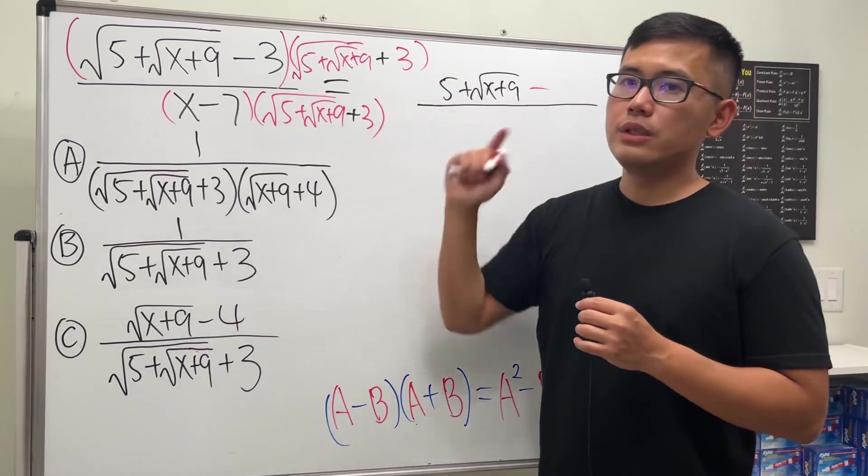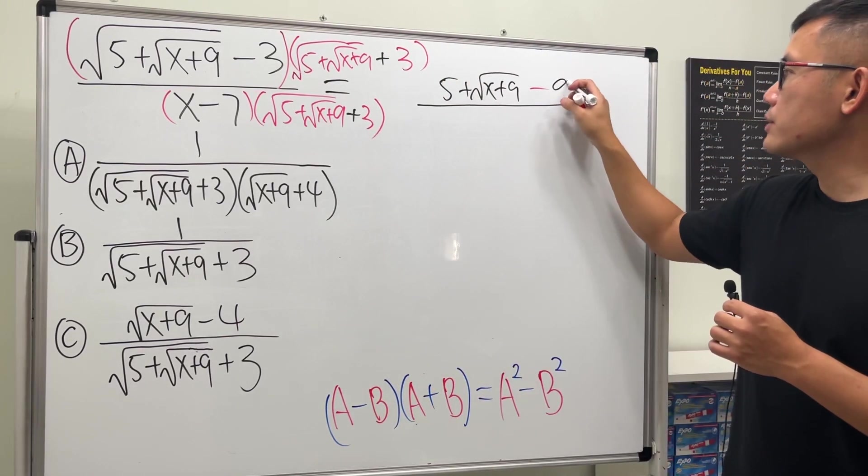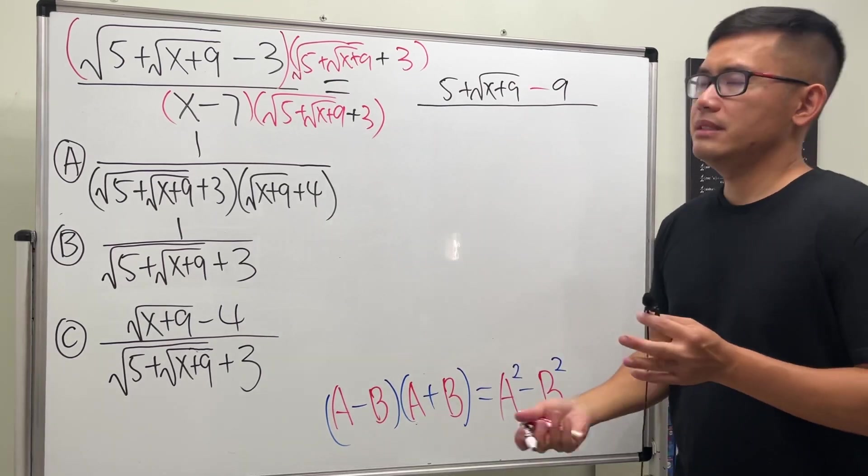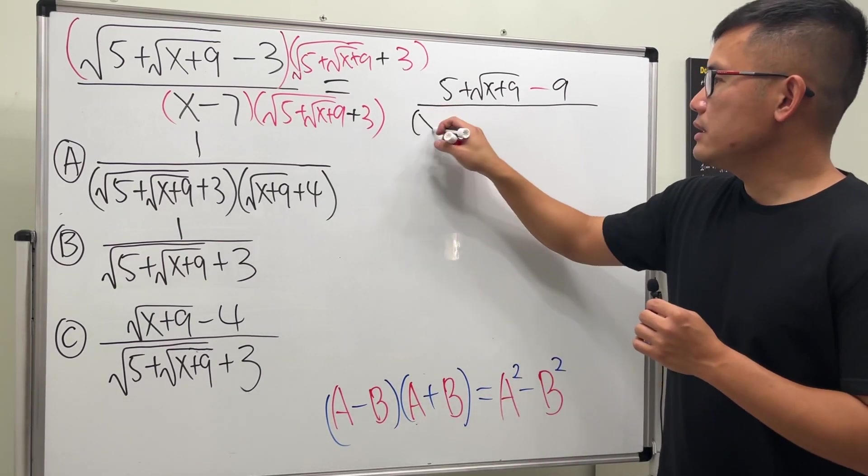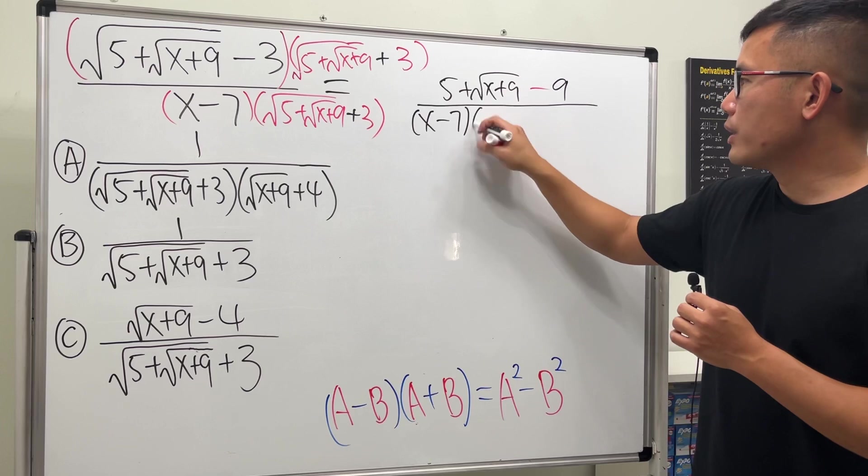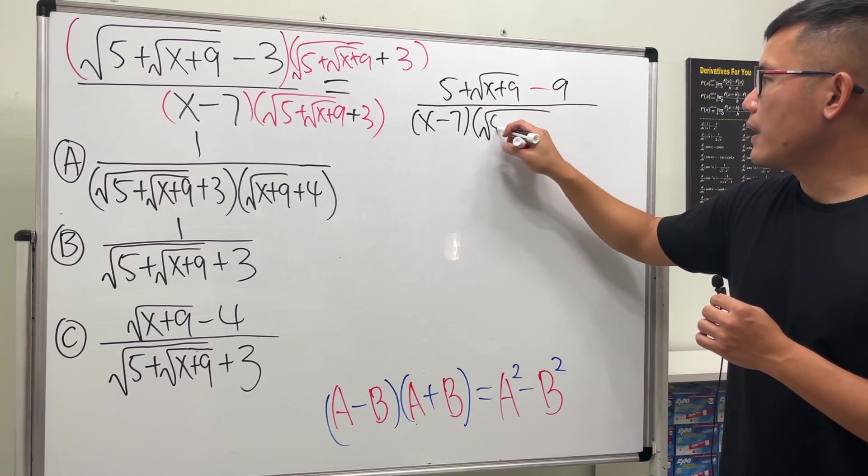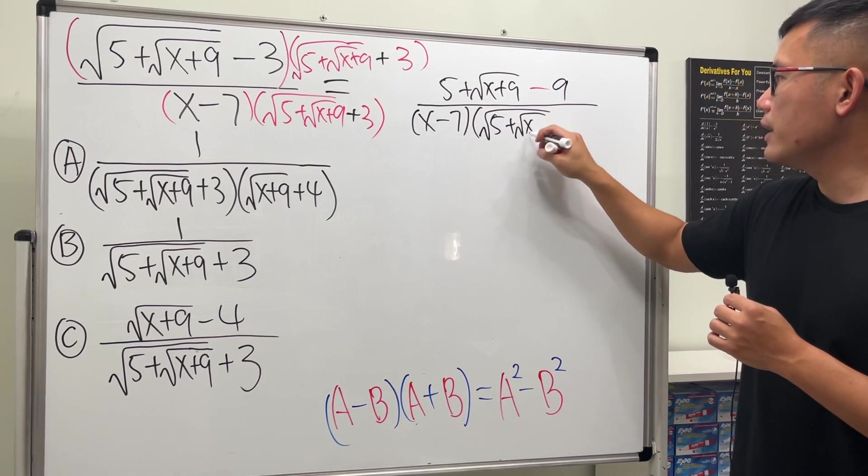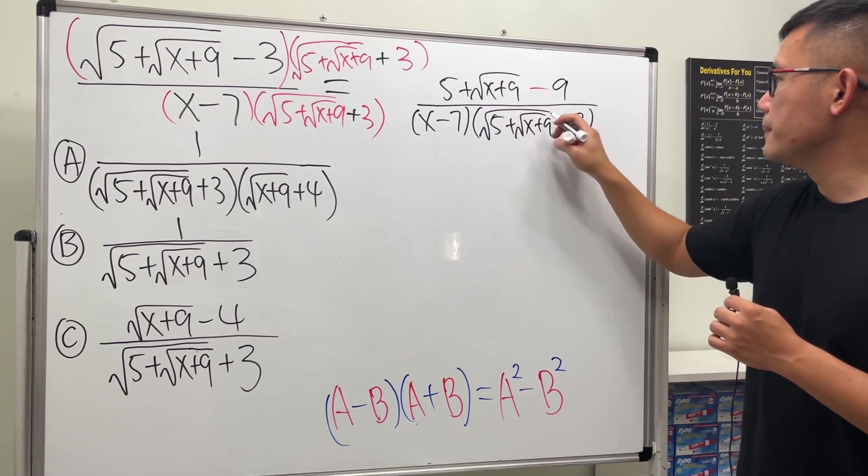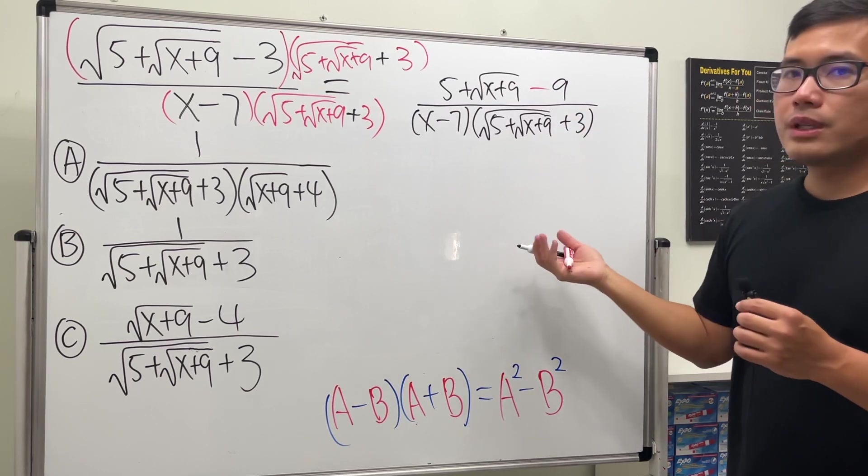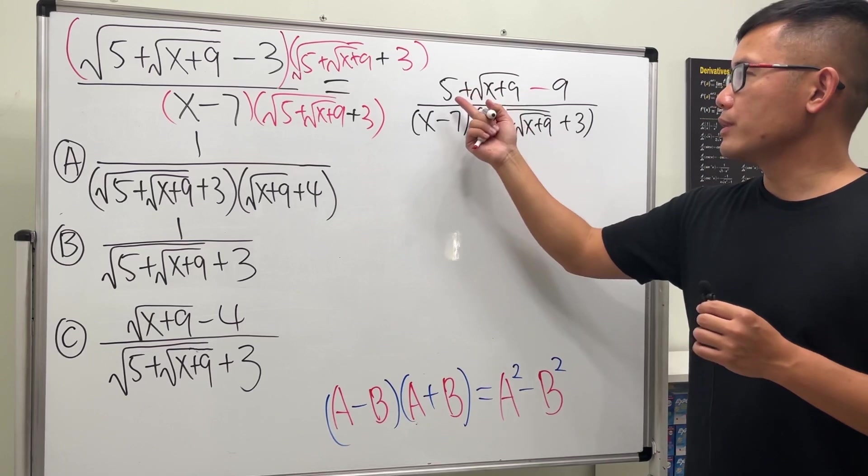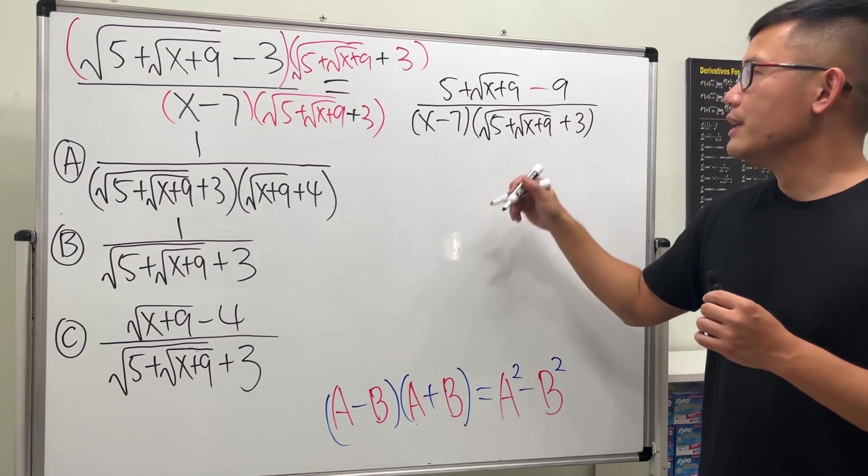And then the bottom, let's just leave it in parentheses: (x-7) times (√5 + √(x+9) + 3). What can we do on the top? We can do 5 - 9, sure. So on the top we actually just have √(x+9) - 4.